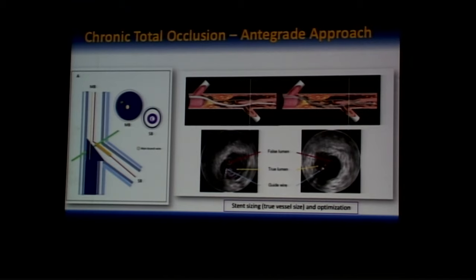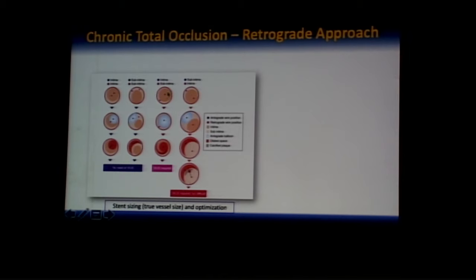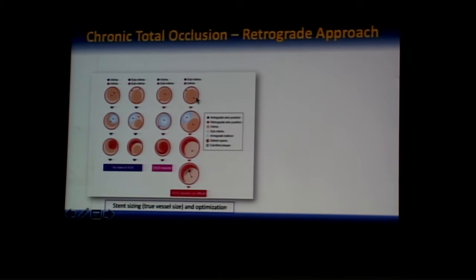For chronic total occlusion, during antegrade CTO PCI with a blunt occlusion and suitable side branch, side branch IVUS identifies exactly where to penetrate the proximal cap. When the antegrade wire fails and enters the sub-intimal space with no retrograde option, IVUS can guide the wire back into the intimal plaque and into the distal true lumen. In retrograde strategy, IVUS tells you exactly where the wires are — when both wires are in the same space, reverse CART is easy; when in different spaces, IVUS helps redirect the wire for successful reverse CART.